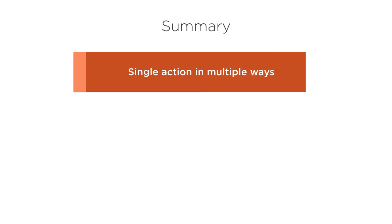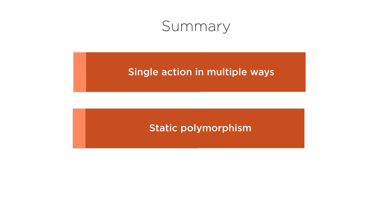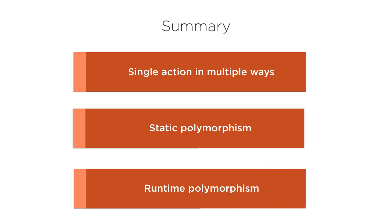In this video we talked about the important concept of polymorphism, which means multiple forms — to perform a single action in multiple ways. We saw that there are two types: static or compile-time polymorphism, in which overloaded methods share the same name but differ in parameters and the compiler resolves the call at compile time; and runtime polymorphism, where the Java Virtual Machine figures out the method to call at runtime based on the type of object it is invoked on. Hopefully you got a good understanding of polymorphism. Thanks for watching!